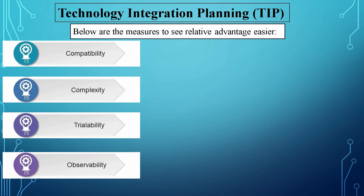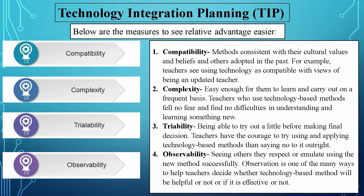Below are the measures to see relative advantage more easily. 1. Compatibility: methods consistent with their cultural values and beliefs and others adopted in the past. For example, teachers see using technology as compatible with views of being an updated teacher. 2. Complexity: easy enough for them to learn and carry out on a frequent basis. Teachers who use technology-based methods feel no fear and find no difficulties in learning something new. 3. Triability: being able to try out a little before making a final decision. Teachers have the courage to try using technology-based methods rather than refusing outright. 4. Observability: seeing others they respect using the new method successfully.